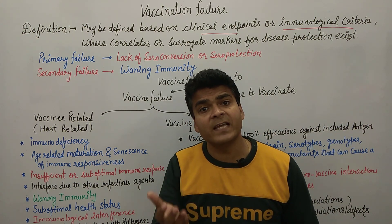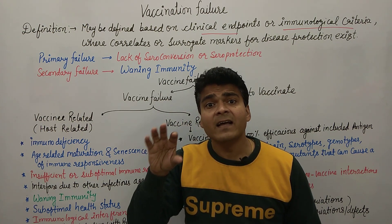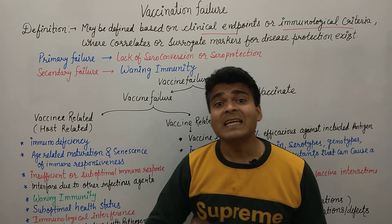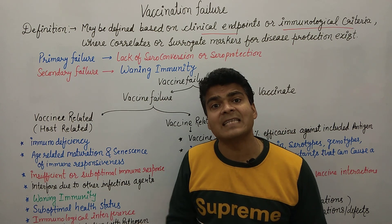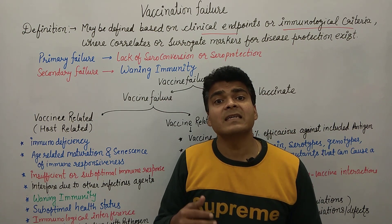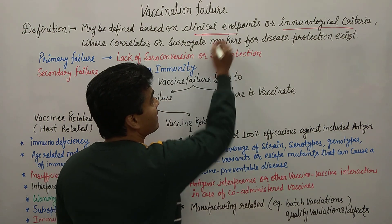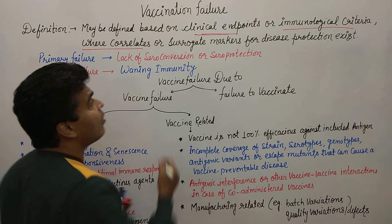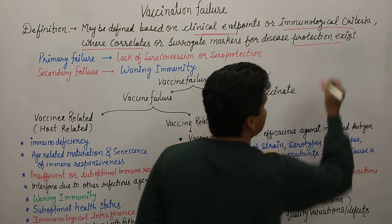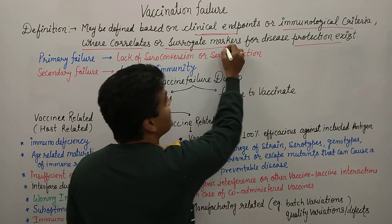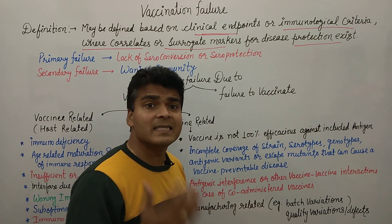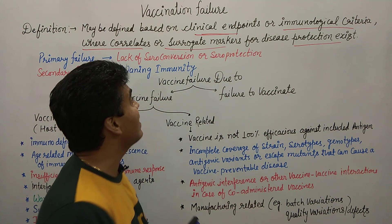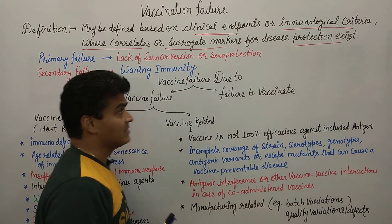Why does vaccination failure occur? Basically because of immunological criteria — each and every person has a different immunological condition. The clinical condition of the person also differs, whether the person is already infected or is healthy. So clinical endpoints will be different. These are known as surrogate markers for disease protection. This is the definition of vaccination failure.